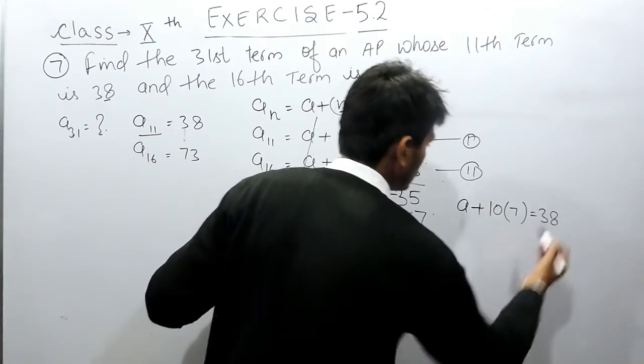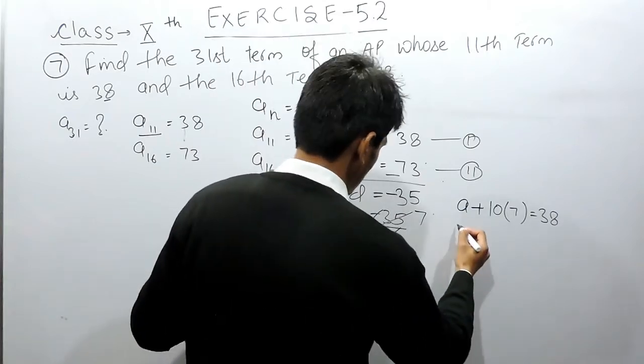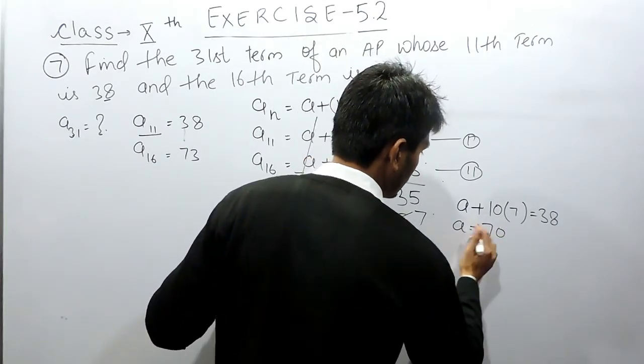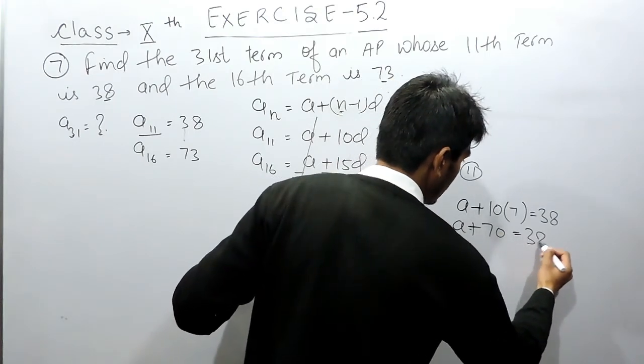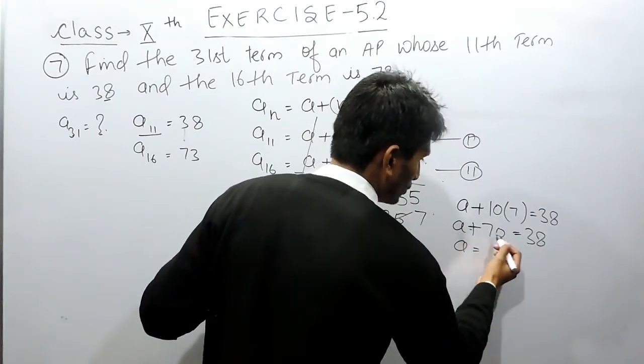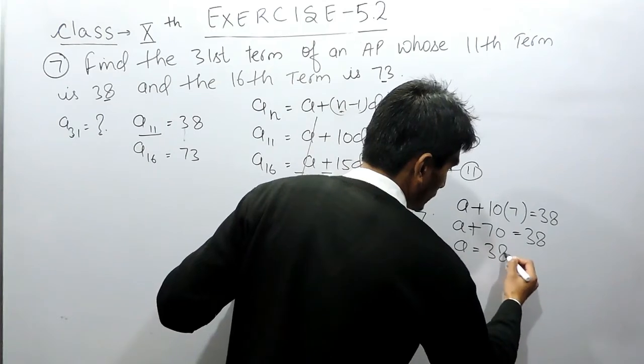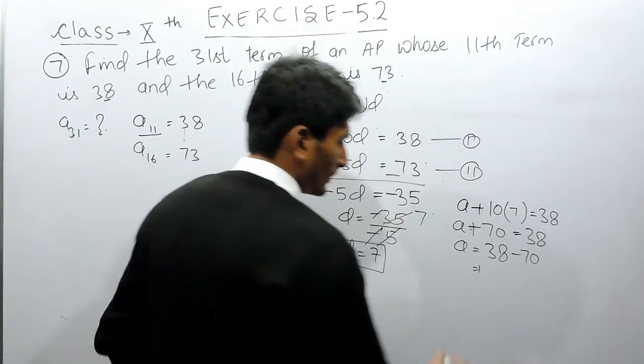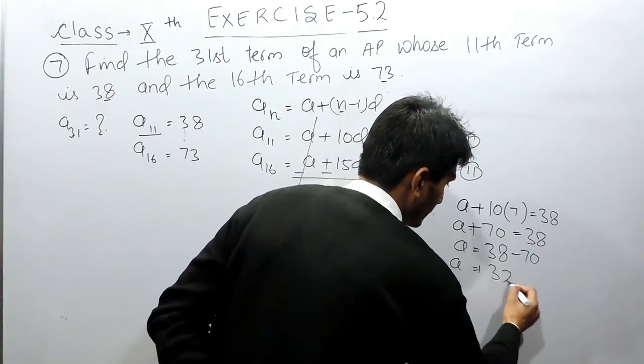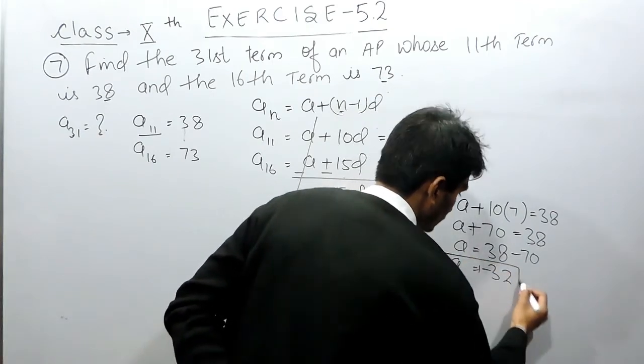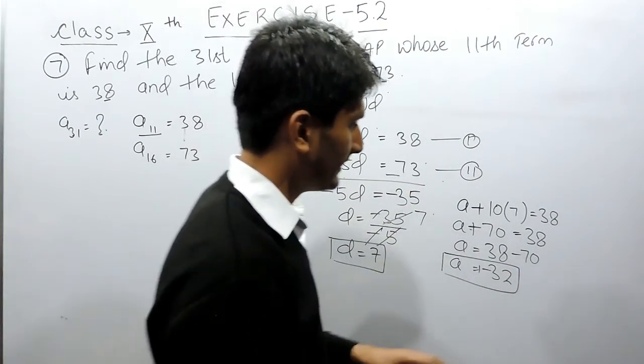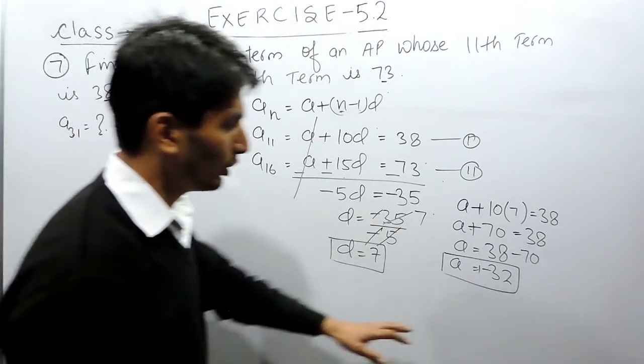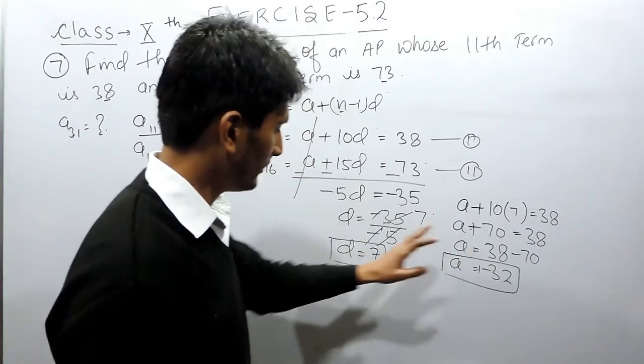So the first term will be 70. This is a plus 70 equals to 38, and a will be equals to, now this value when shifted to that side should be minus 70. So here the value of a must be minus 32, because 70 minus 38 is 32. Now we know the value of a which is the first term, we know the common difference which is 7.